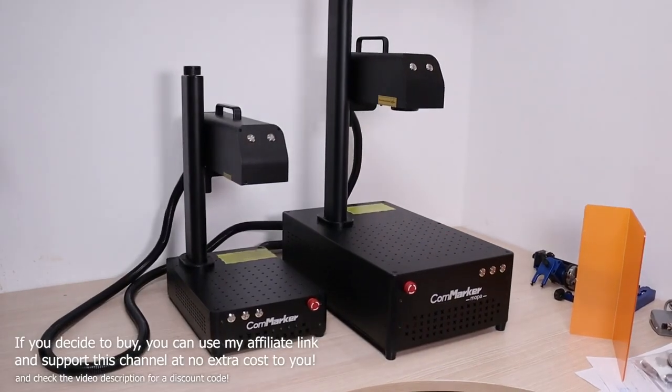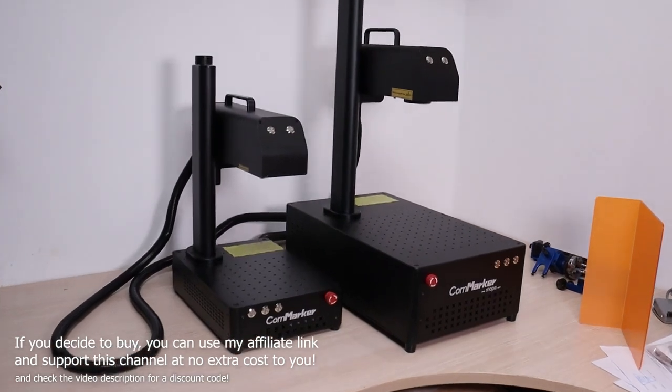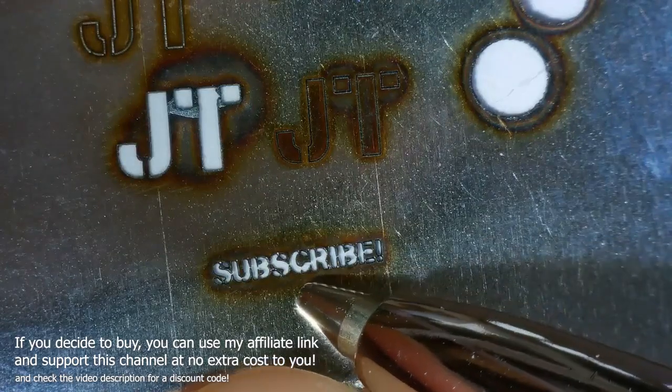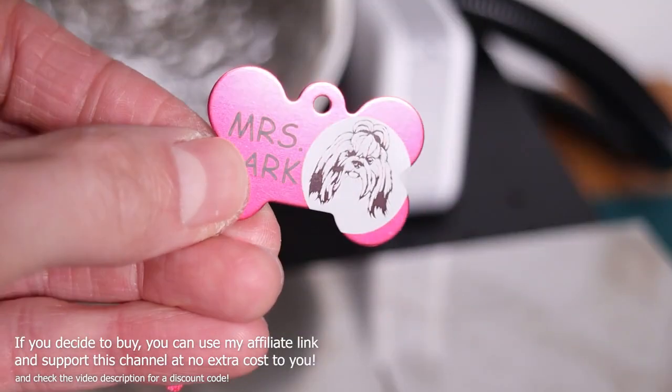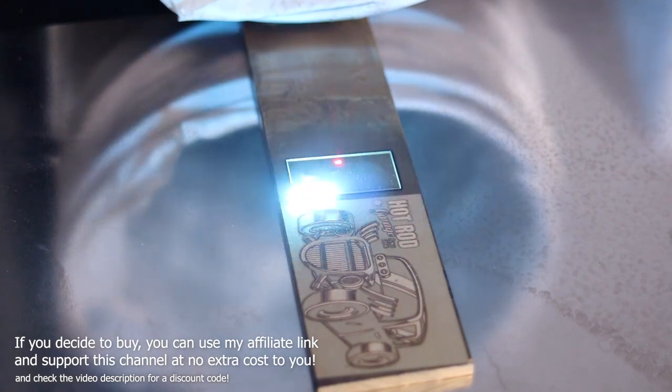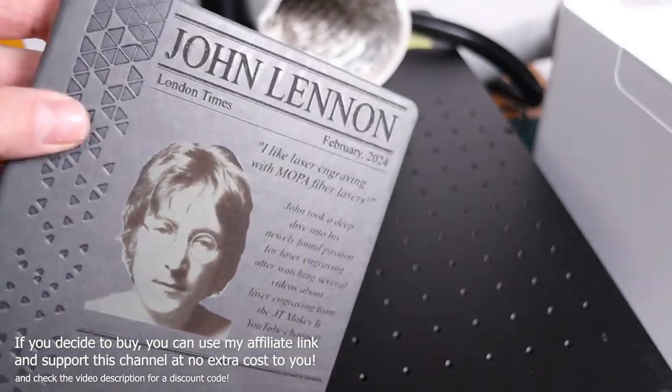In conclusion, I can say that the Commarker B4 60-watt JPT Mopa fiber laser is an incredibly capable machine, which offers a ton of adjustability and tweaking to allow you to get the desired engraving effect. It is astonishingly fast and powerful, as it can dig deep into the material with ease. But it can also be very delicate and precise if needed.